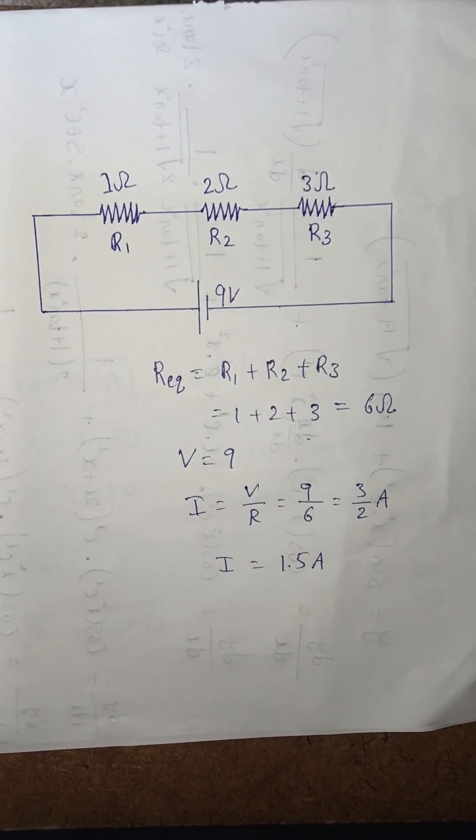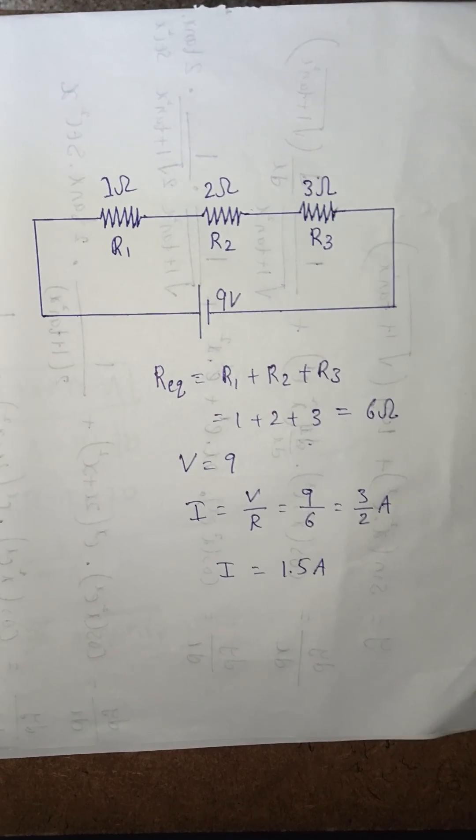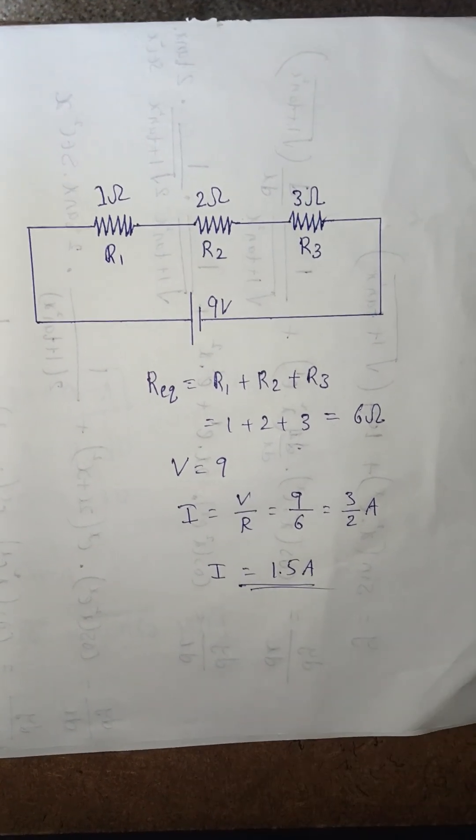In series, the current is same across each resistor, so the current across each resistor is 1.5 amperes.